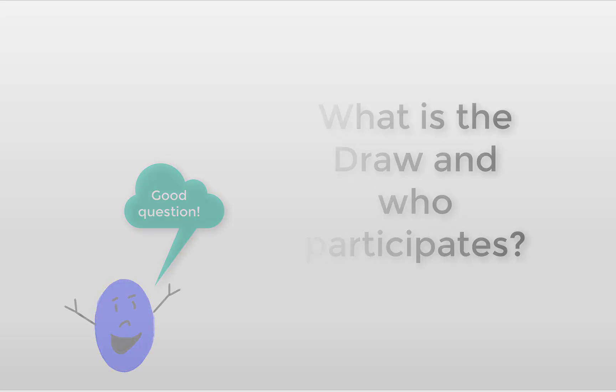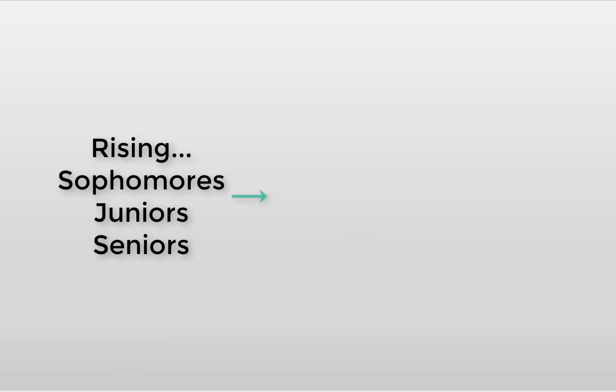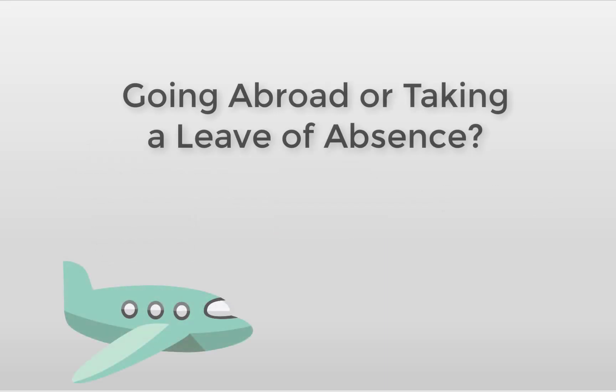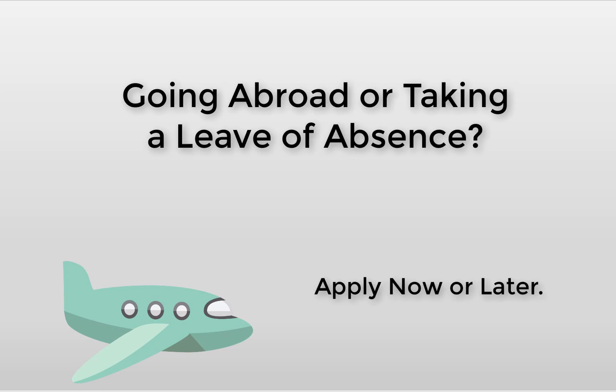The draw is the first assignment round for next school year. Any rising sophomore, junior, or senior who plans to live in undergraduate housing at any time next year should participate in the draw. Students who are going abroad or taking a leave of absence until winter or spring quarter can apply for housing during the draw or wait until the waitlist deadline for the quarter in which they will return.